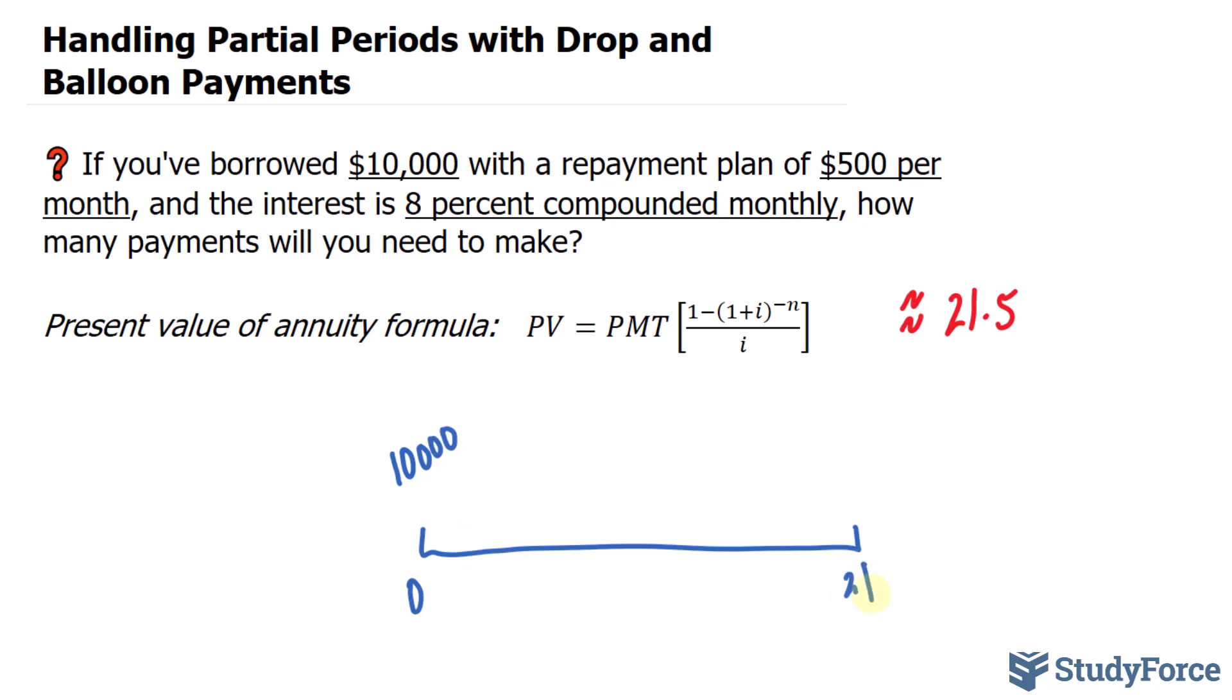Fast forward to the end of the 21st month, you will pay $500 again, but that won't be enough to pay back the $10,000 because of this partial period. How do we ensure that our loan is repaid back completely?